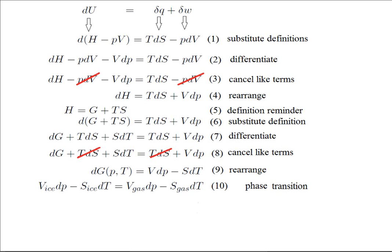This was Clapeyron's big deal. He recognized that at equilibrium, the two phases, ice and vapor, would have to have equal energy and could therefore be equated.